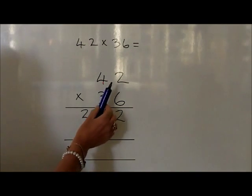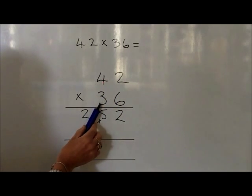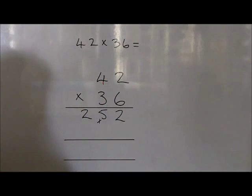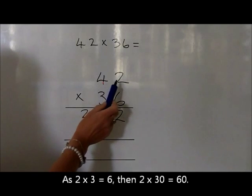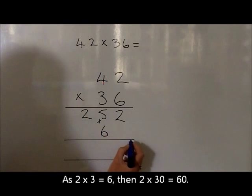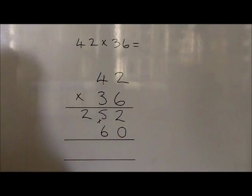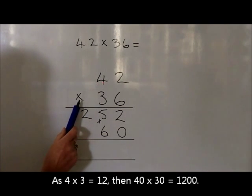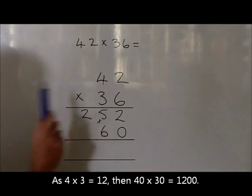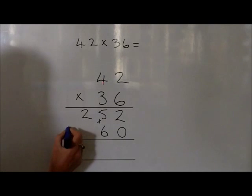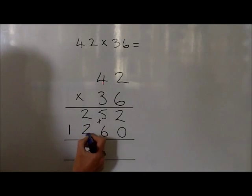We now look at multiplying by the tens on the bottom row. So we start off with 2 times 30, which is 60, because 2 times 3 is 6. So 2 times 30 is 60, which we write as a 6 in the tens and a 0 in the units. We now look at 40 times 30 — knowing 4 times 3 is 12, but we're actually doing 40 times 30, which are both 10 times bigger. So 40 times 30 is 1,200. We've got no carries here, so we write that as a 1 in the thousands and a 2 in the hundreds.